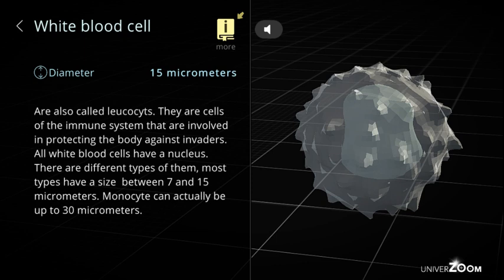White blood cell, diameter: 15 micrometers. Also called leukocytes. They are cells of the immune system that are involved in protecting the body against invaders. All white blood cells have a nucleus. There are different types of them. Most types have a size between 7 and 15 micrometers. Monocytes can actually be up to 30 micrometers.